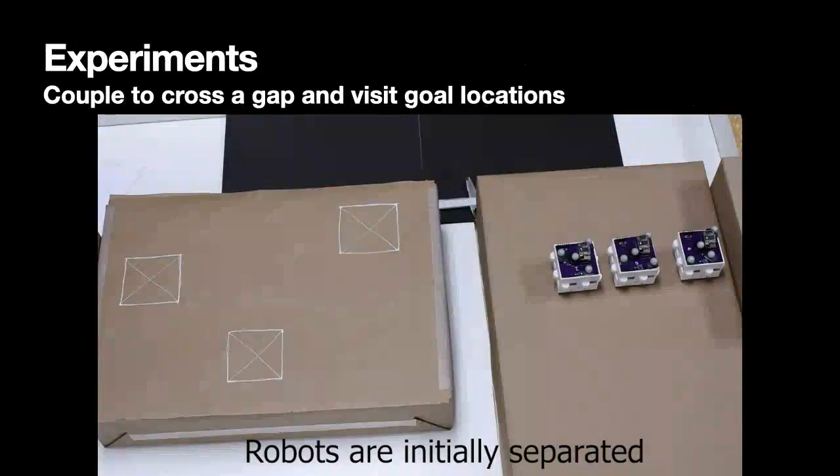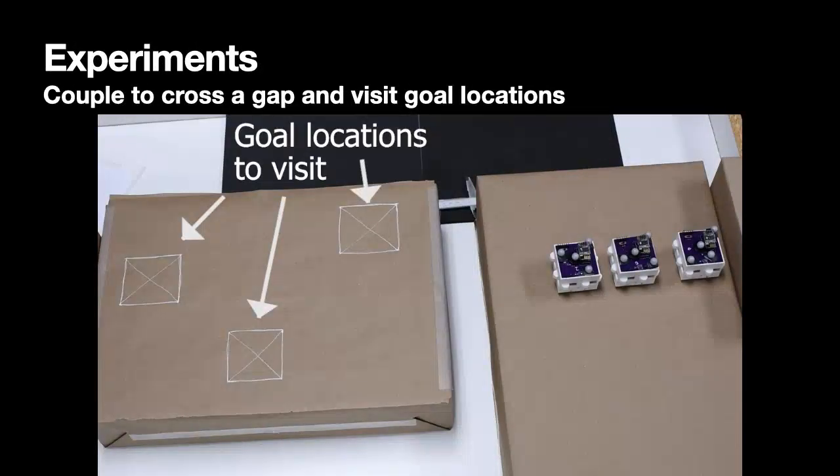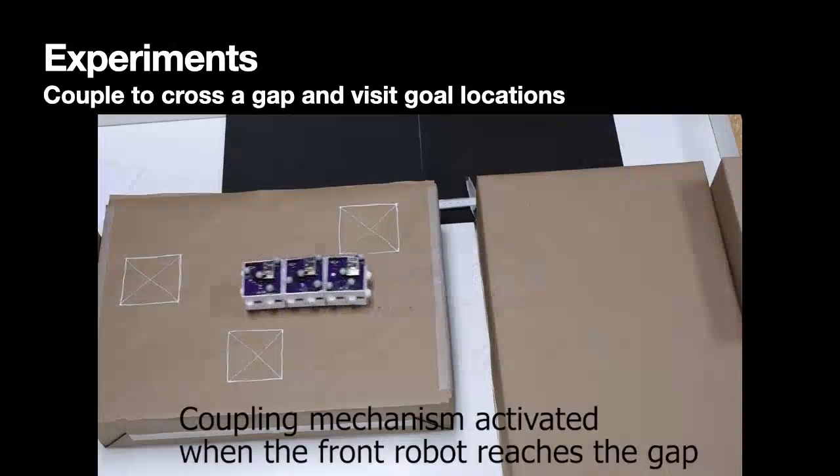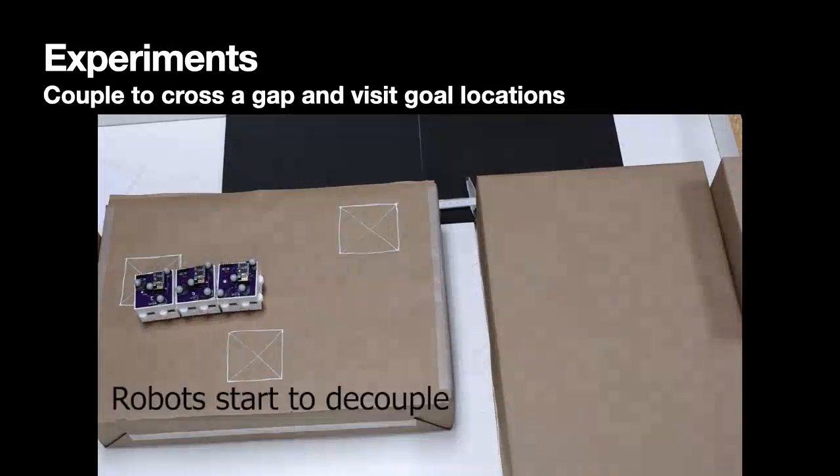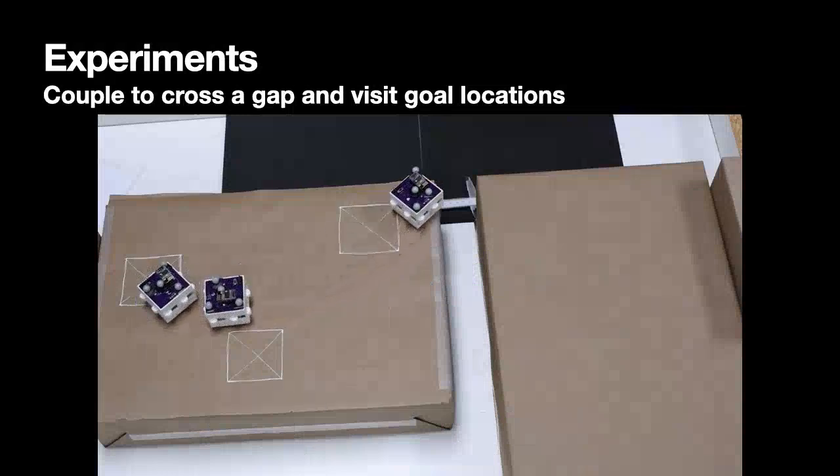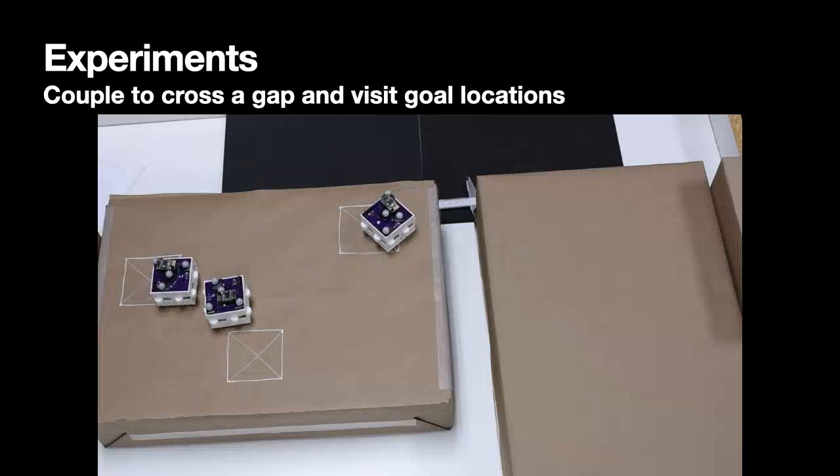Here we show a demo of the robot initially decoupled. They are able to couple with each other on one side of the platform and form a chain. This whole assembly will be able to move across the gap and then decouple and move to individual goals on the other platform.